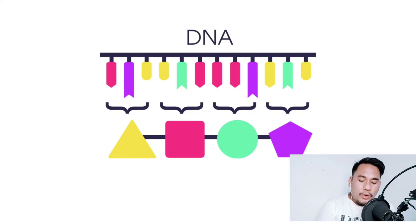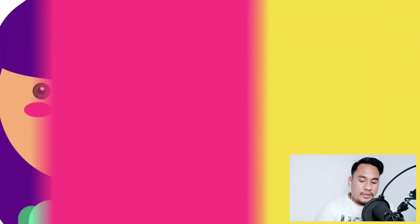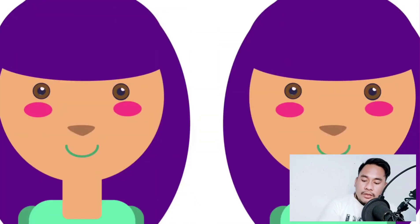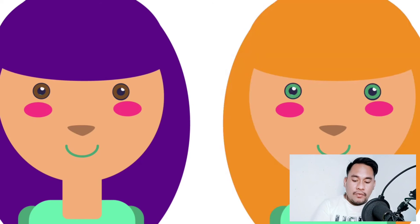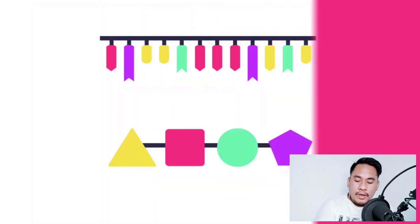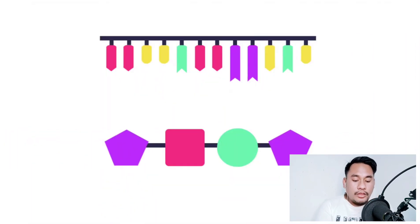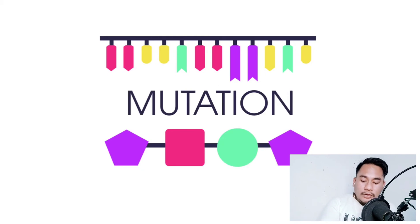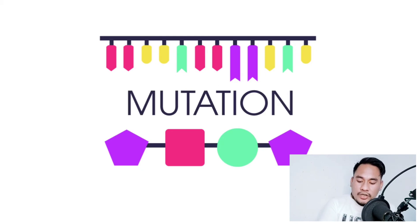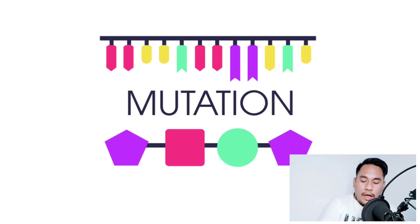Each individual's DNA is made of slightly different genes, which explains the differences between people, such as hair color. A change in the code — a mutation — can lead to a protein with a different structure being produced. This can lead to conditions such as albinism.